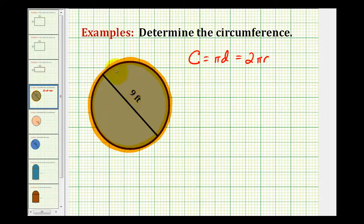In this problem, since we're given the diameter as nine feet, the distance from here to here passing through the center of the circle, we'll use this first formula to determine the circumference.